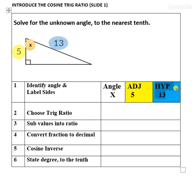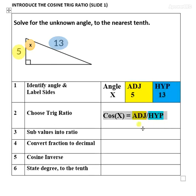Now we identify the trig ratio. Recall SOHCAHTOA. In this case we have adjacent and hypotenuse, so we're using the cosine trig ratio.